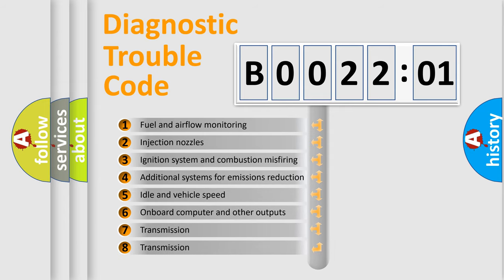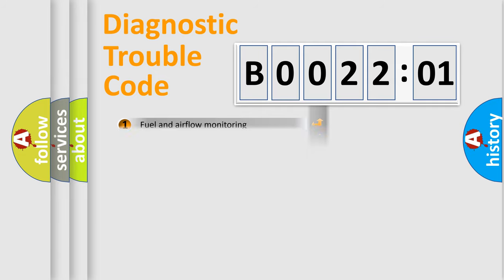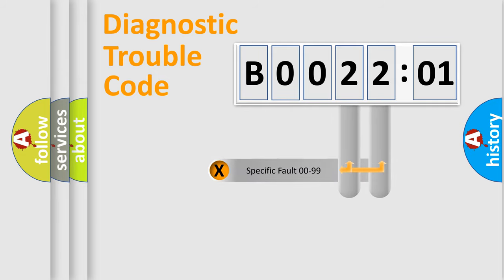The third character specifies a subset of errors. The distribution shown is valid only for the standardized DTC code. Only the last two characters define the specific fault of the group.